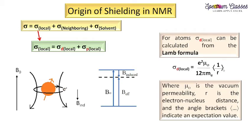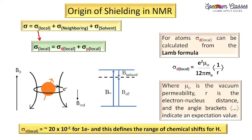The expectation value ⟨1/r⟩ comes from quantum mechanics and will be explained in a later series. The sigma d value is approximately 20 × 10⁻⁶ for one electron, and this defines the range of chemical shift for the proton — which is why proton NMR has a range of about 20 ppm. The reference for this value will be provided in the description box.